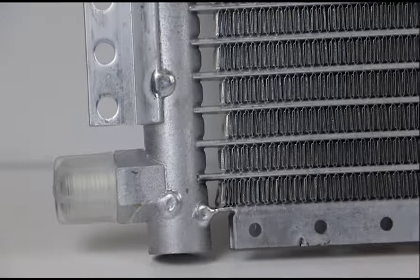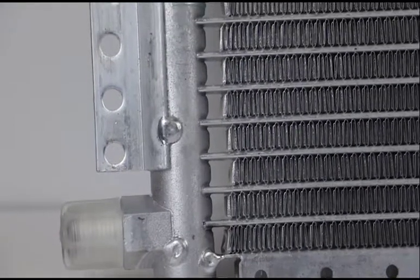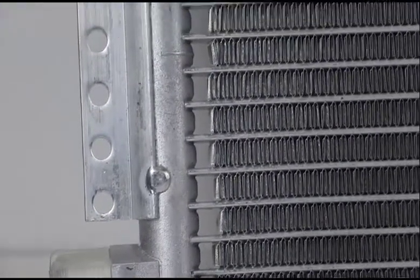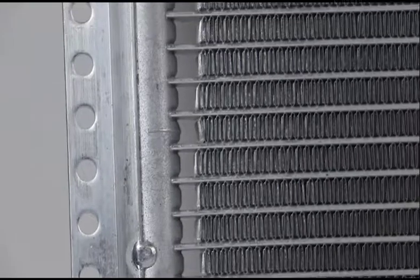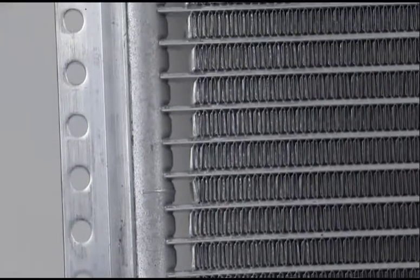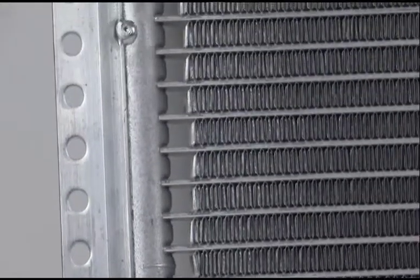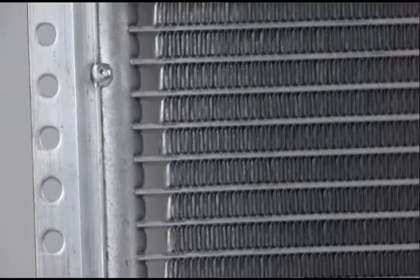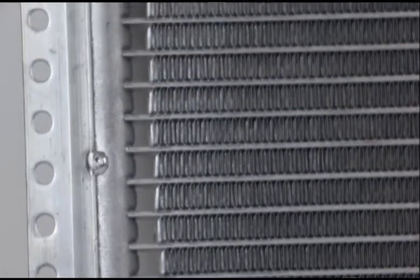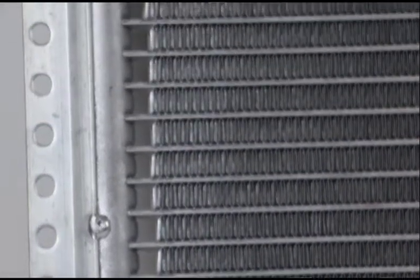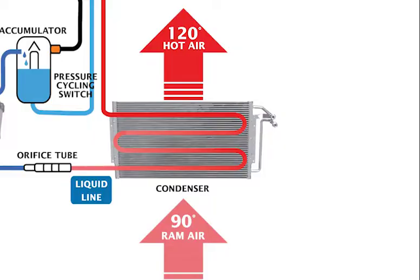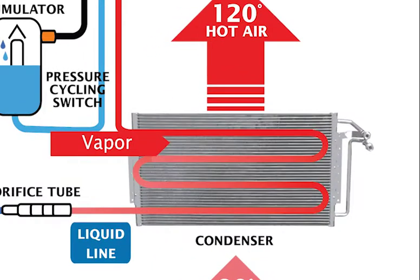The AC condenser is constructed of tubing surrounded by cooling fins. This condensation leaves the top part of the condenser filled with vapor and the lower part filled with liquid. Because of this, the inlet at the top should be hotter to the touch than the outlet at the bottom.